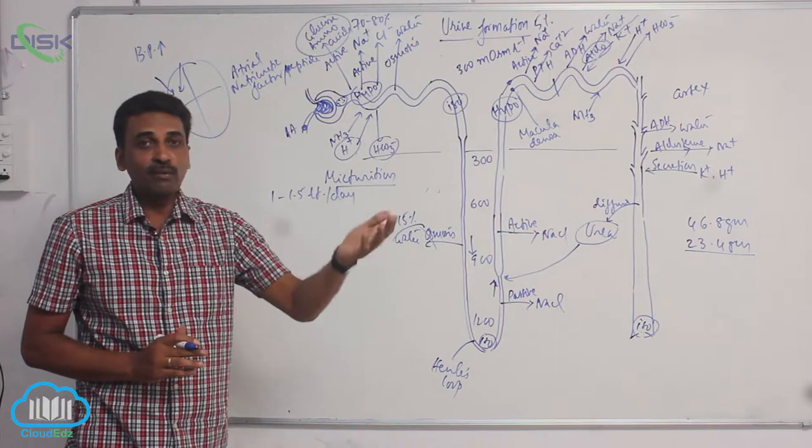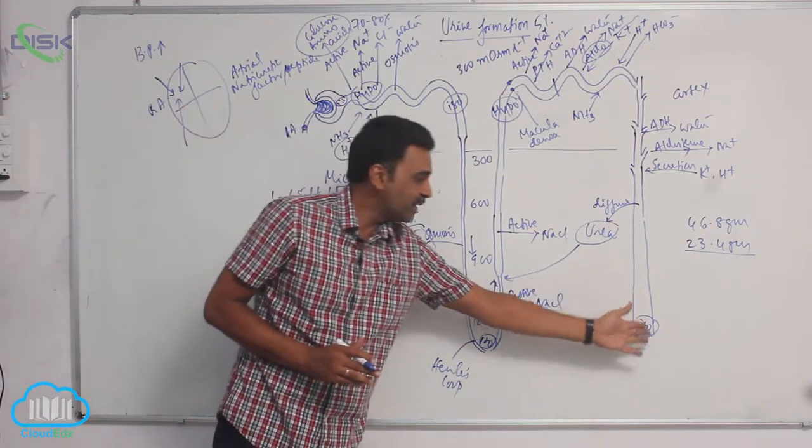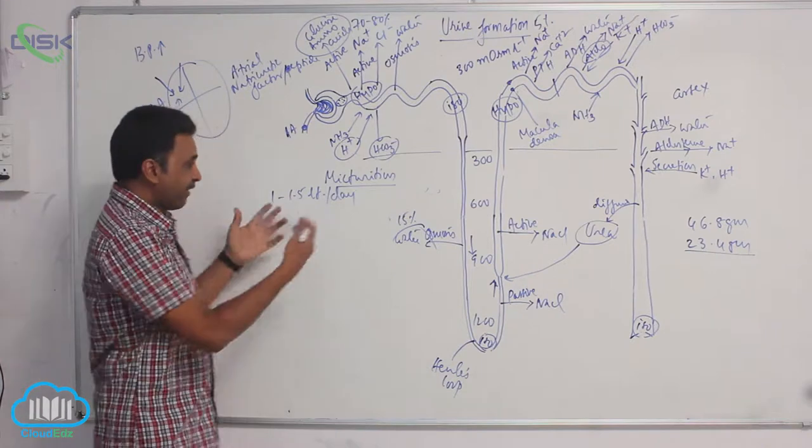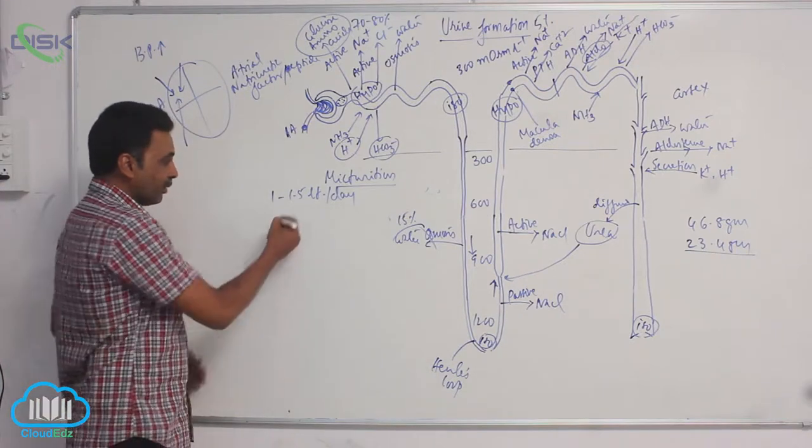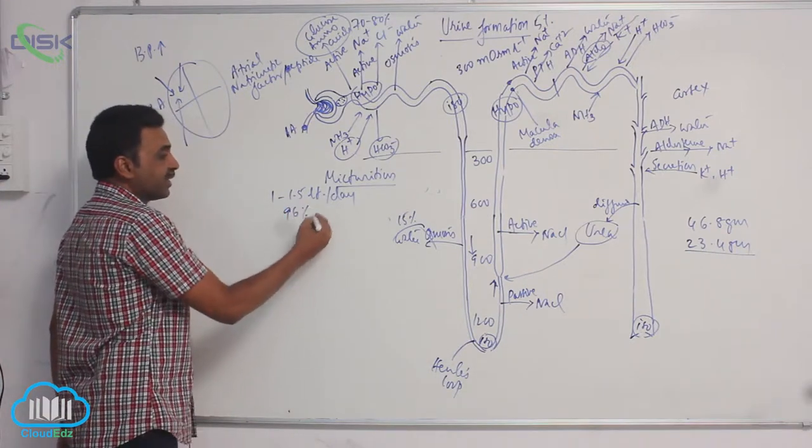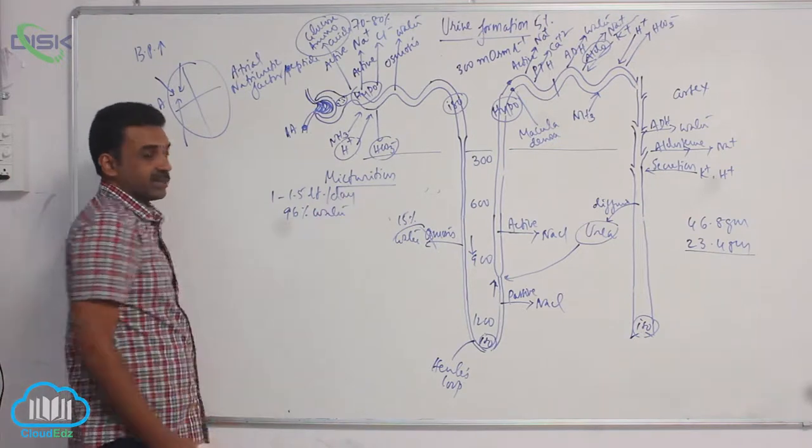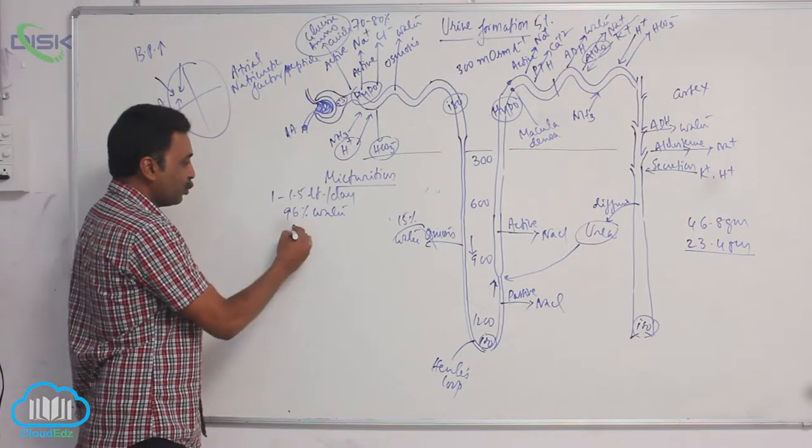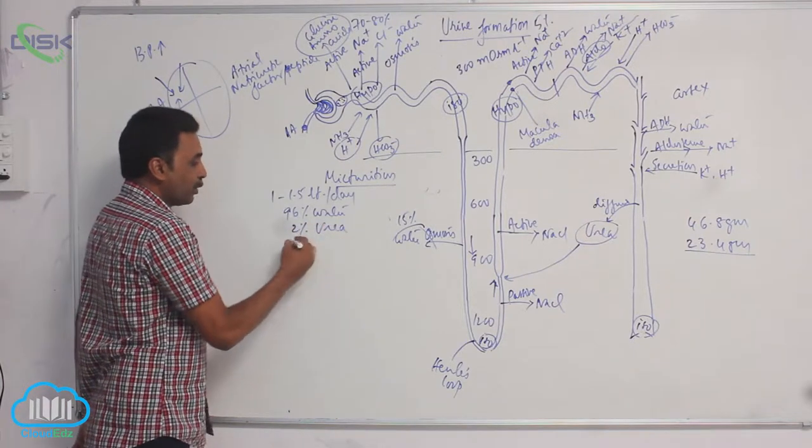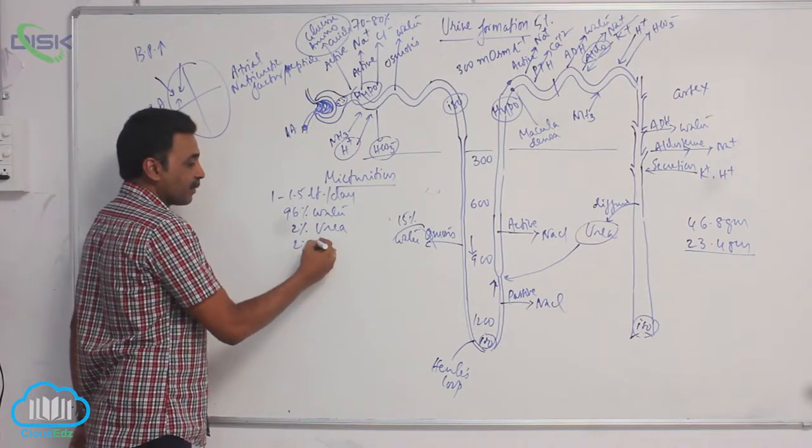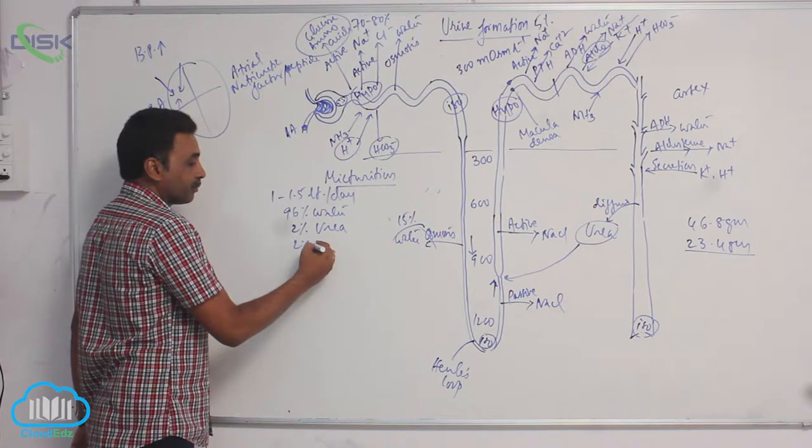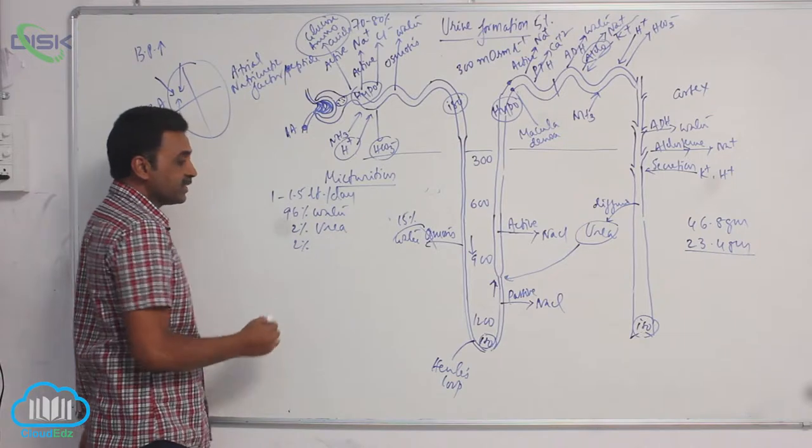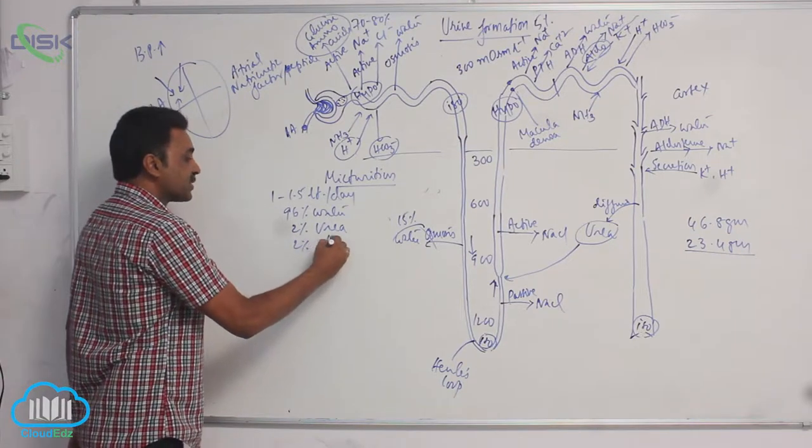Out of 180 liters, only 1 or 1.5 liters of urine is coming outside. But still, if I take that water, 96 percent, the composition of that urine, 96 percent is water. 2 percent is urea, 2 percent is all other substances.